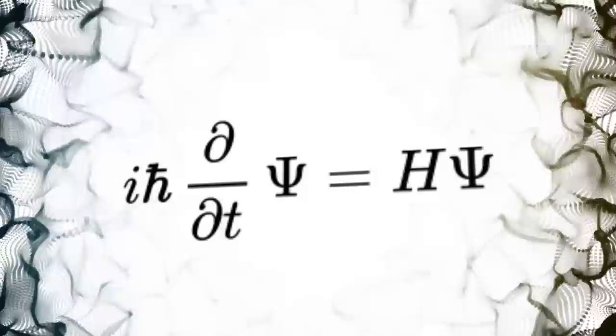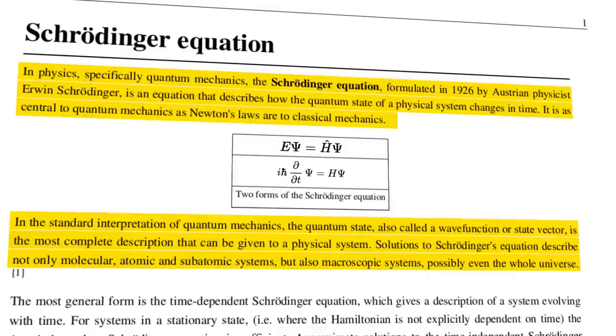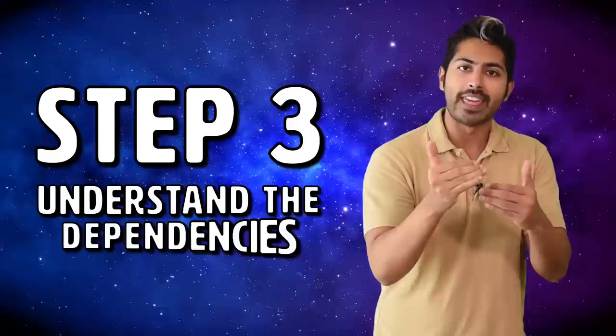Once we find an equation we care about, we need to define its objective. What is the equation trying to say? What does it represent? How is it being used? Read it in the context of how it's presented, be it in an article, a scientific paper, a video, or a textbook. Chances are that there will be some English text before and after the equation that describes it.